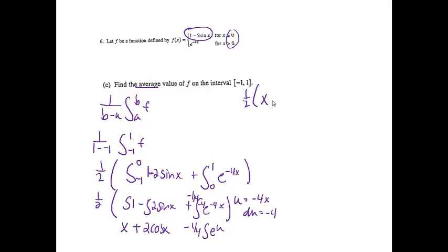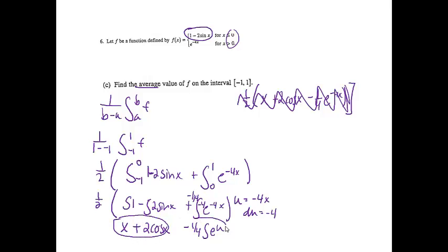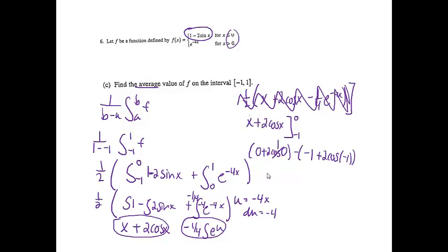Evaluating x plus 2 cosine x from negative 1 to 0: we get (0 plus 2 cosine 0) minus (negative 1 plus 2 cosine negative 1). Cosine 0 is 1, giving 2, then distributing the minus gives plus 1 plus 2 cosine negative 1 — but we can't simplify cosine of negative 1 without a calculator. So this part gives 3 plus 2 cosine negative 1.